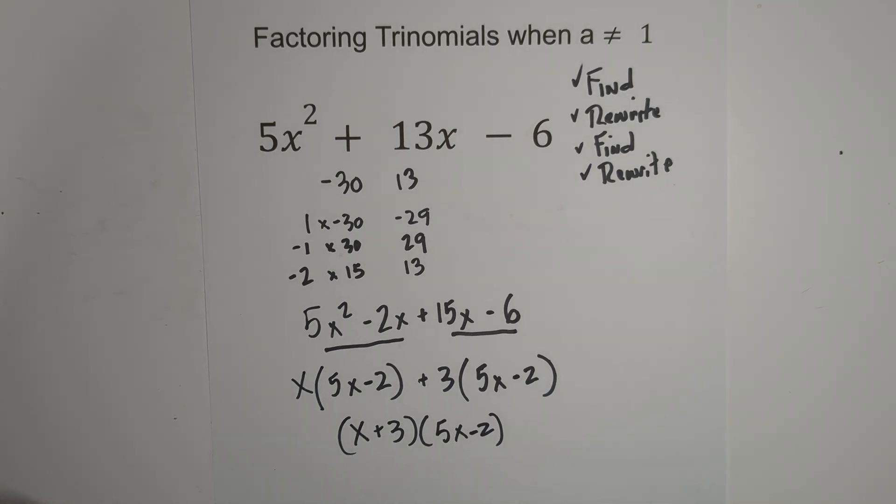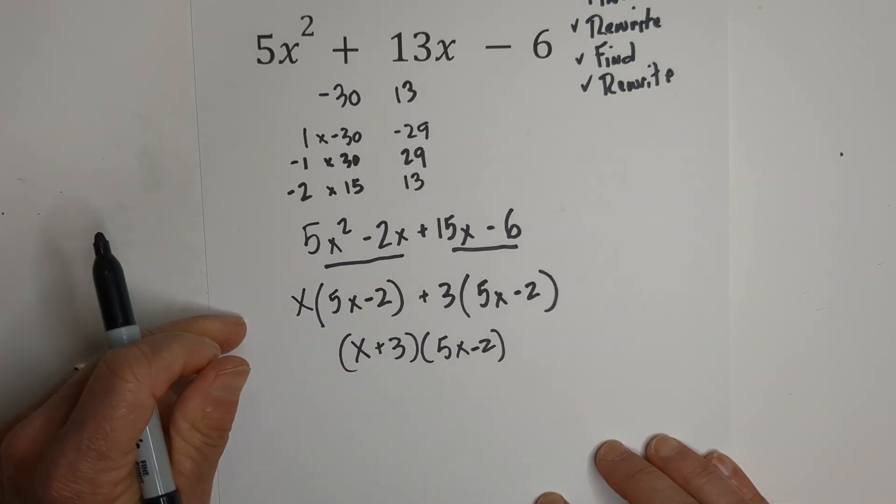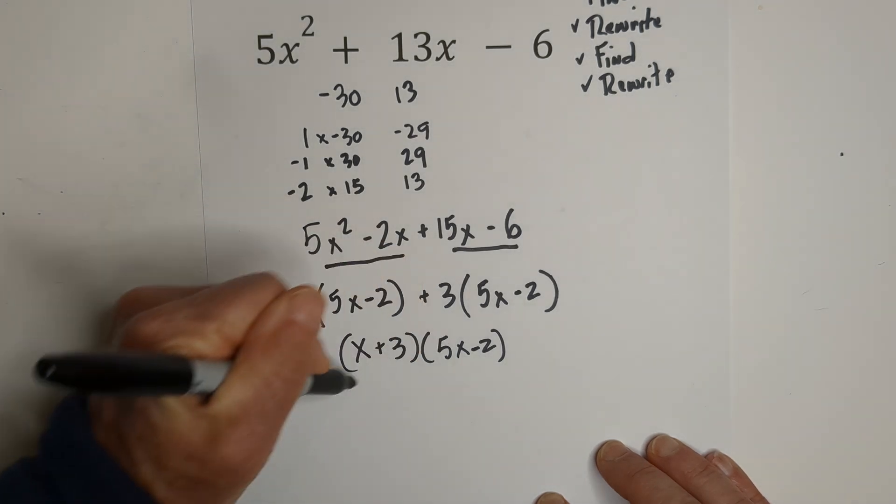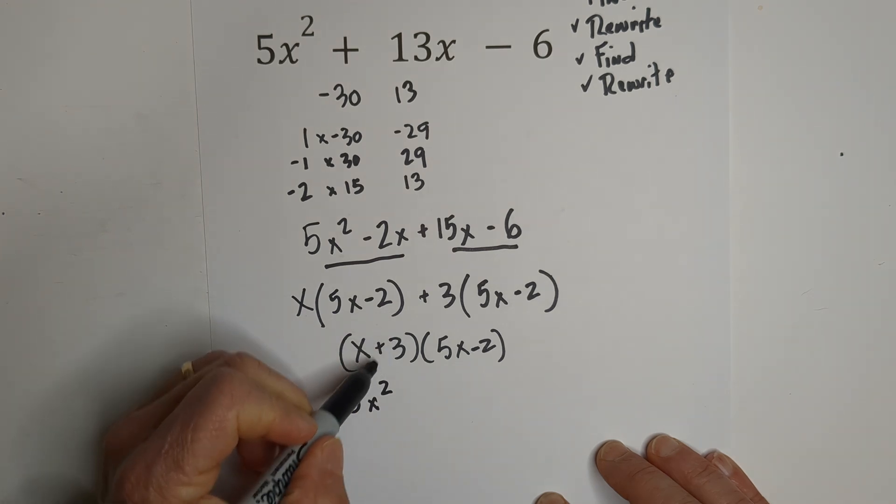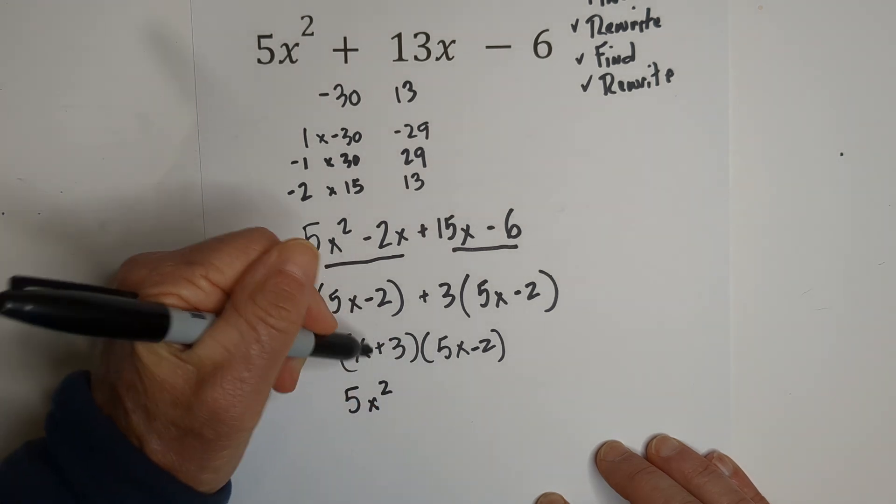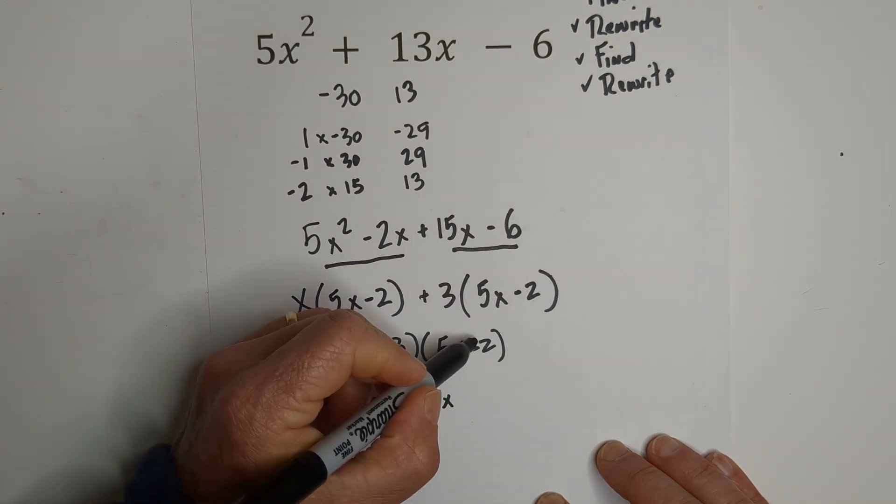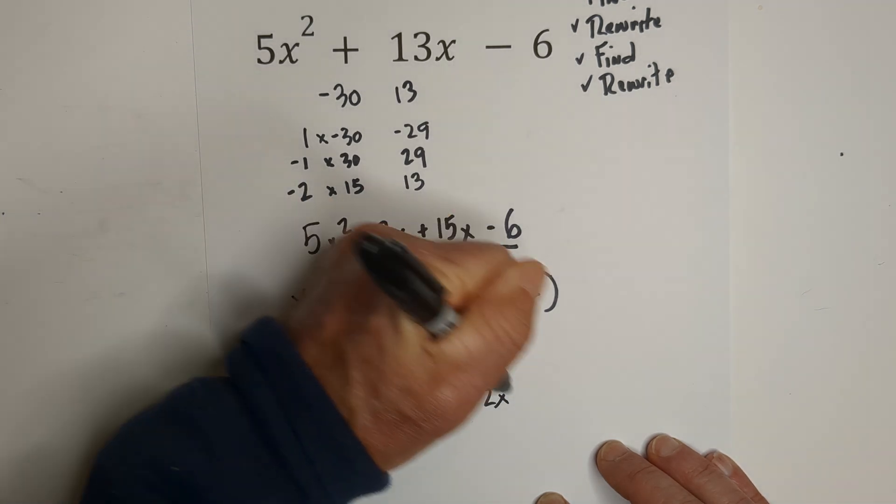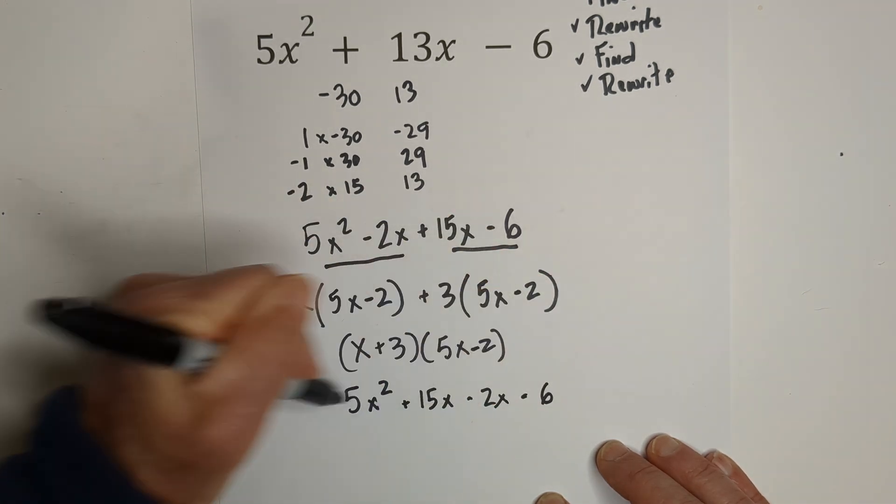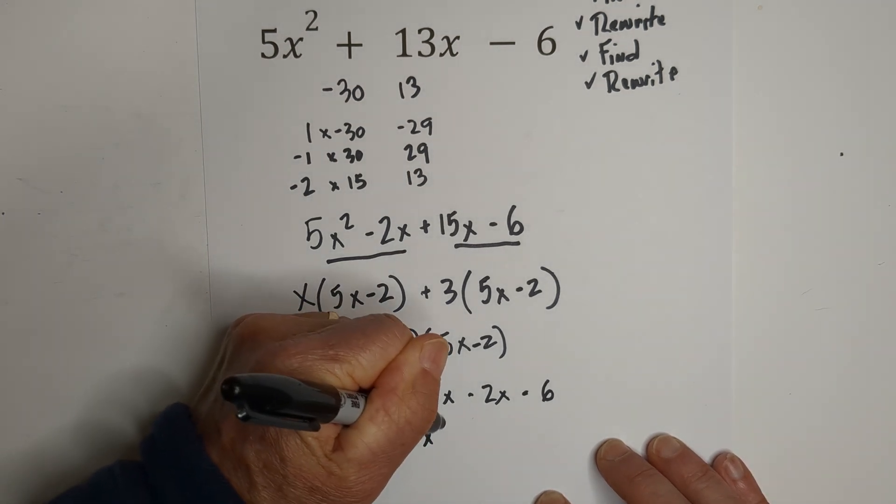And just to be safe, let's go ahead and check our work. Remember, we were foiled this. So, we have first x times 5x is 5x squared. Inner, we have 3 and 5x, so that's a positive 15x. Outer, x times negative 2, negative 2x. And last, 3 times negative 2 is negative 6. Combine like terms.